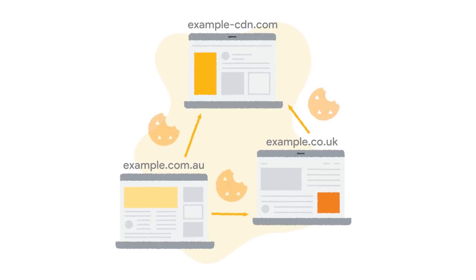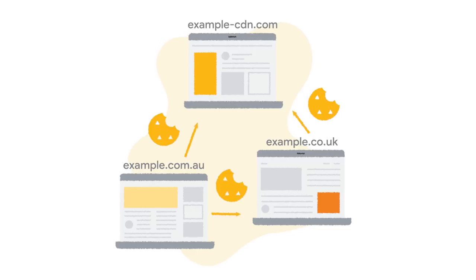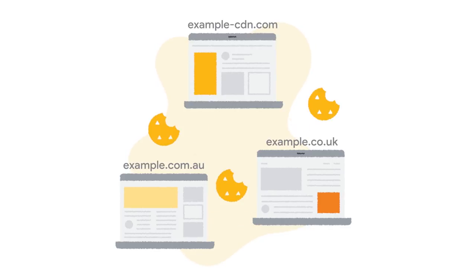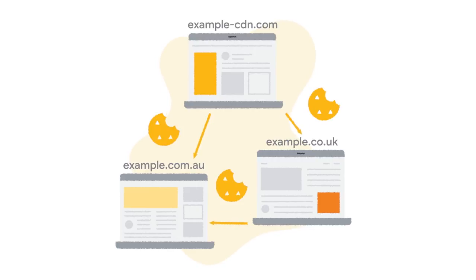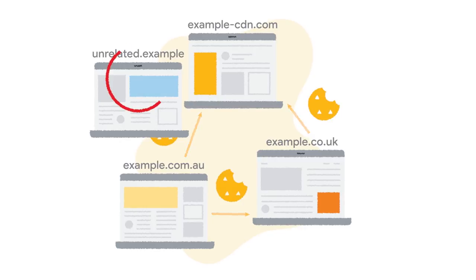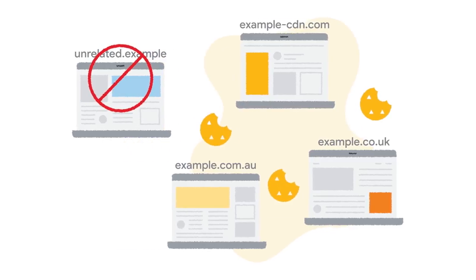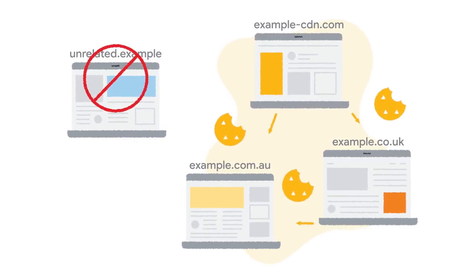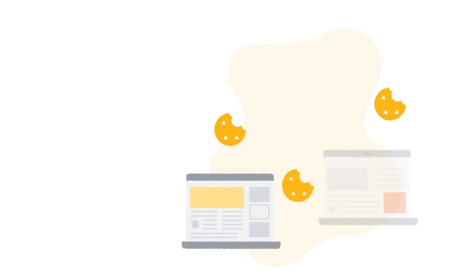What we need is a way for browsers to treat domains like those just mentioned as first party in situations where first party and third party are otherwise treated differently. Of course, any solution also needs to prevent abuse of the system. For example, it must not be possible to declare organizations that include unrelated sites with different owners just in order to gain first party privileges.